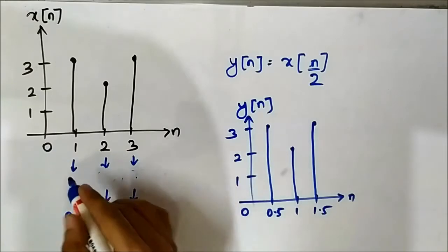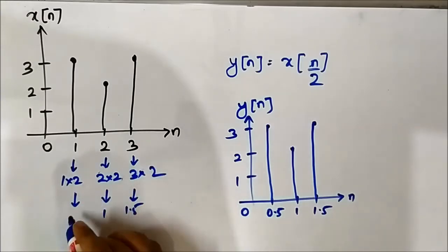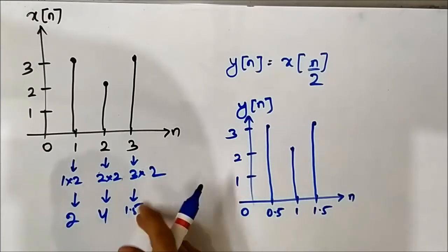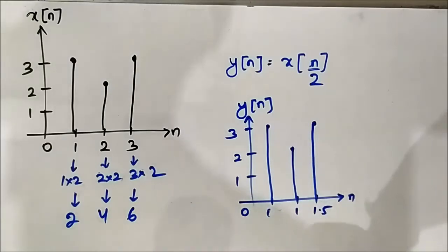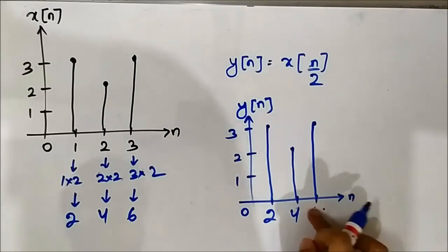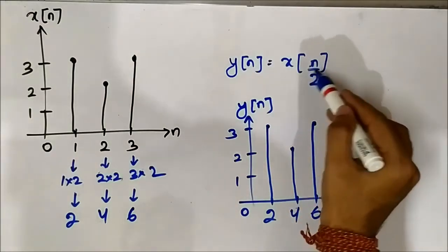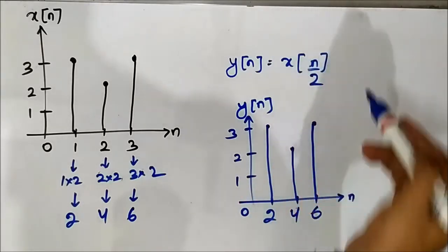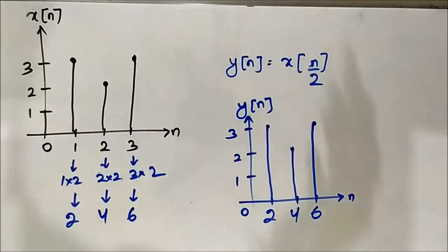For x[n/2]: the time instances get multiplied by 2 — 1×2=2, 2×2=4, 3×2=6. When n/2 is written inside the bracket, the 2 is dividing n there, so the time instances get multiplied by 2 in the output. This is just the opposite of x[2n]. The same rule applied in continuous time domain as well.